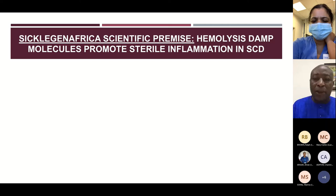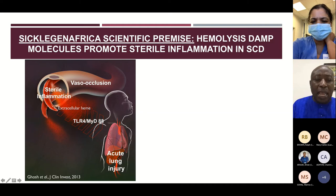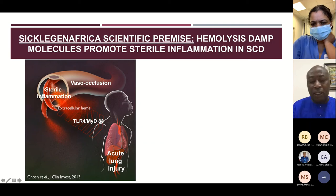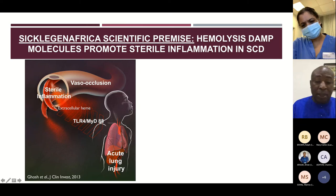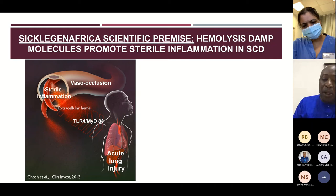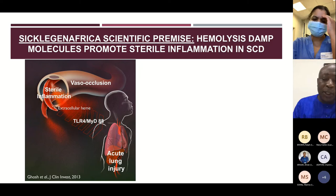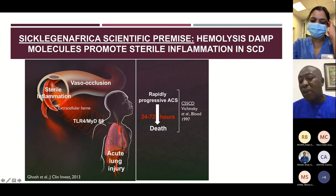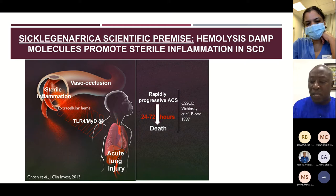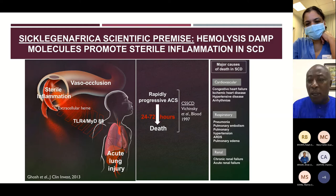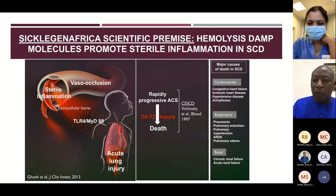Sickle Gen Africa's scientific premise is that the danger molecules released by hemolysis promote sterile inflammation in sickle cells. Excess heme and excess cell-free hemoglobin through TLR4 signaling — which we demonstrated in a mouse model in our JCI publication now coming up to 10 years ago — is a pathway that can cause acute lung injury. We now have data that it can also cause acute kidney injury. Unpublished data suggest it can also trigger cerebral infarcts in this parental mouse model. We know the rapidly progressive acute chest syndrome mirrors this experimental model, and this pathway causes tissue injury in the cardiovascular, respiratory, and renal systems.